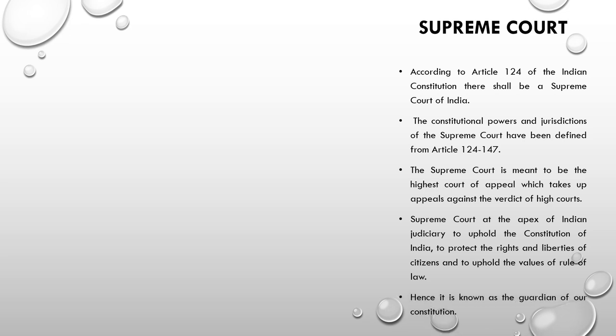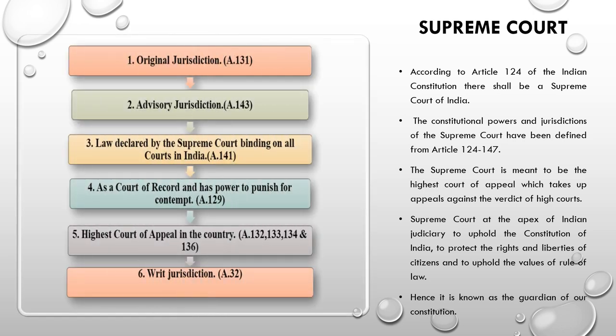It is also known as the guardian of our constitution. The jurisdiction of the Supreme Court includes: first, original jurisdiction; second, advisory jurisdiction; third, law declared by the Supreme Court is binding on all courts in India; fourth, as a court of record it has the power to punish for contempt; fifth, it is the highest court of appeal in the country; and sixth, writ jurisdiction.